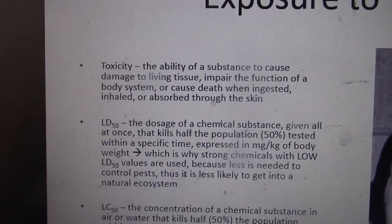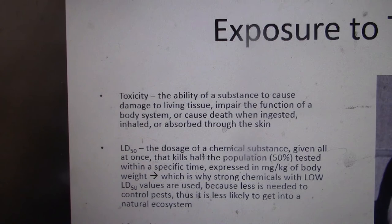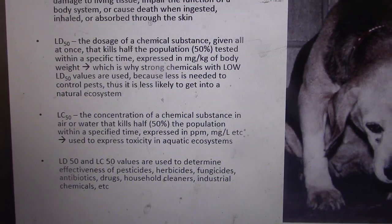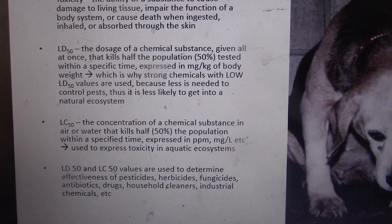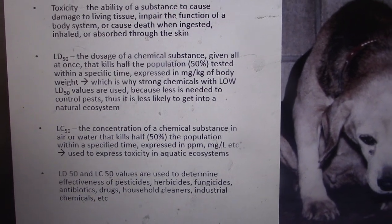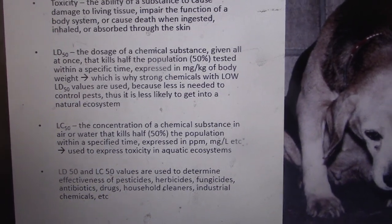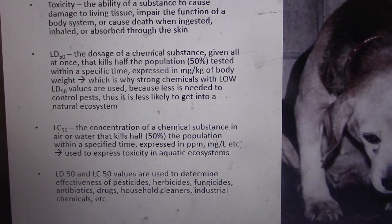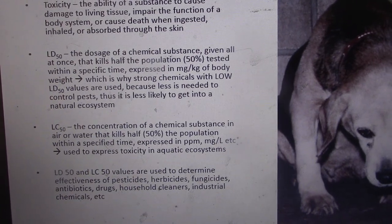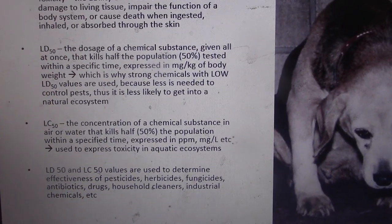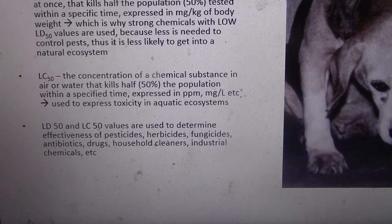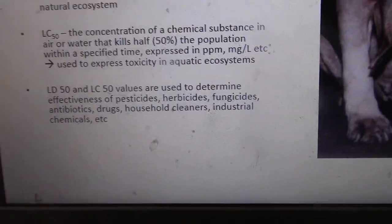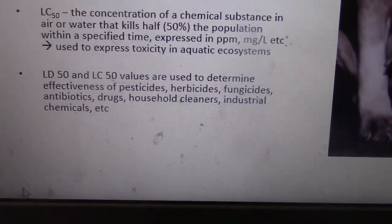LC50 is used once a chemical is exposed in an environment — it describes what concentrations can be considered safe. It's the concentration of a chemical substance in air or water that kills half the population within a specified time, expressed in parts per million. LD50 and LC50 values are used to determine the effectiveness of pesticides, herbicides, fungicides, antibiotics, drugs, household cleaners, and industrial chemicals — these values determine the concentrations deemed safe.